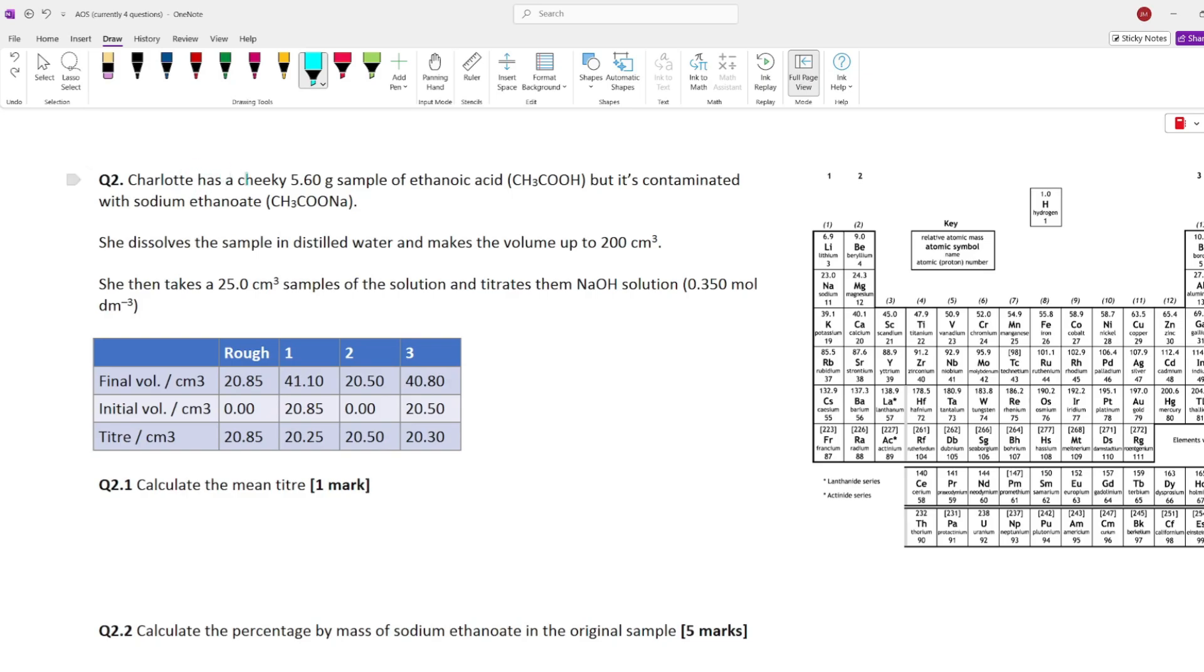Let's read through the questions. So we've got Charlotte, good old Charlotte. She has a cheeky 5.6 gram sample of ethanoic acid, but it's contaminated with sodium ethanoate. She dissolves the sample in distilled water and then makes up the volume to 200 centimeters cubed.